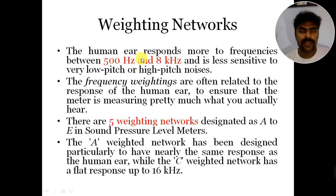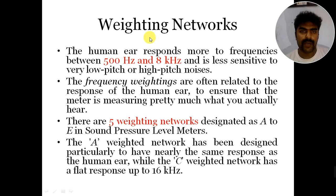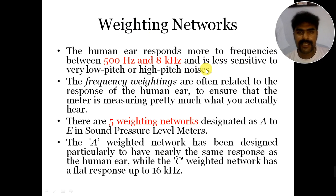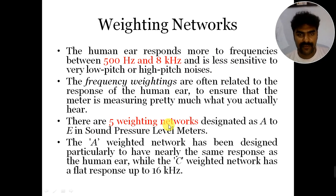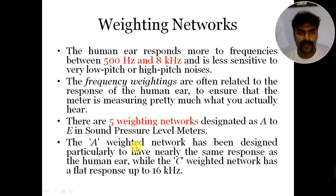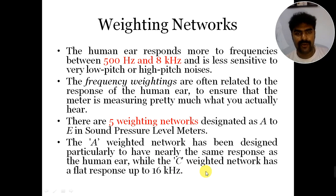The weighing network is another important part of the audible noise measurement circuit. A human ear responds most to frequencies between 500 Hz to 8 kHz, and is very less sensitive to very low pitch or very high pitch noise. In the circuit, there are five weighing networks designated as A through E in sound pressure level meters. The A network has been designed particularly to have nearly the same response as the human ear.